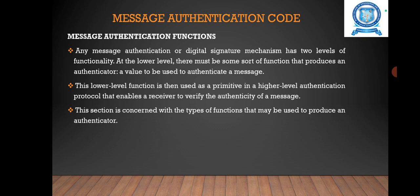Message Authentication Functions: Any message authentication or digital signature mechanism has two levels of functionality. At the lower level, there must be some sort of function that produces an authenticator — a value used to authenticate a message. This lower level function is then used as a primitive in a higher level authentication protocol that enables a receiver to verify the authenticity of a message. A hash function maps a message of any length into a fixed length hash value which serves as an authenticator. Alternatively, the ciphertext of the entire message serves as an authenticator, where the function of the message and a secret key produces a fixed length output.